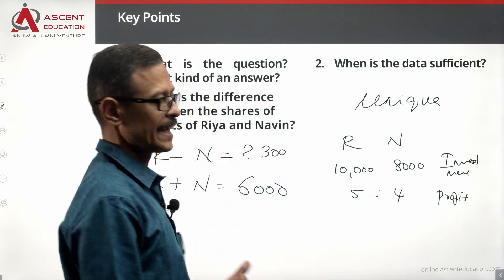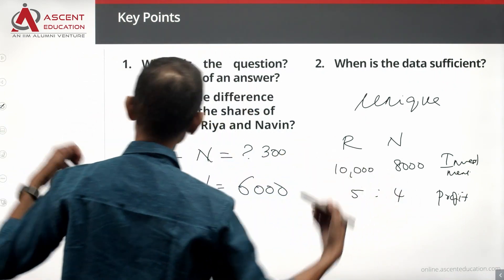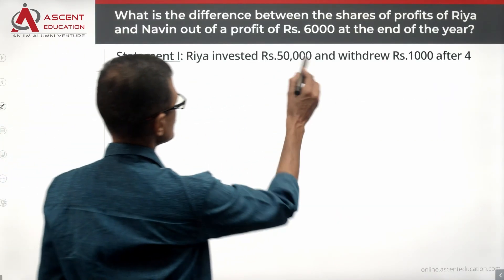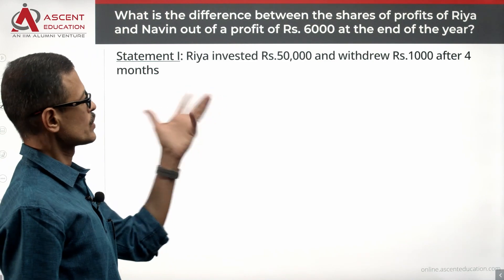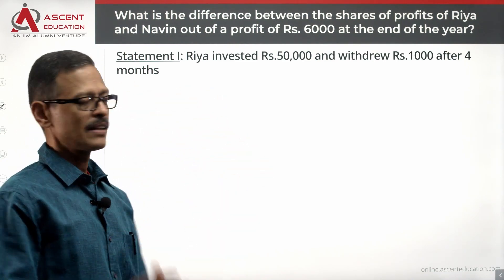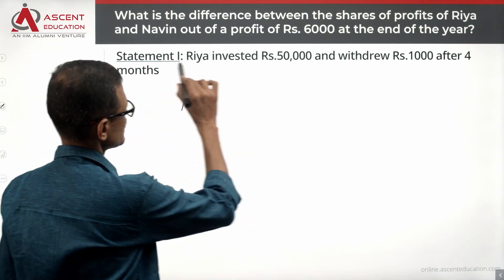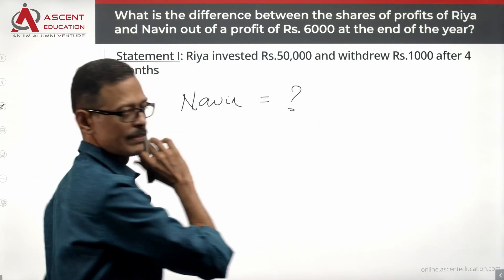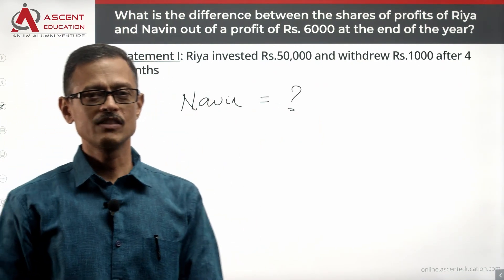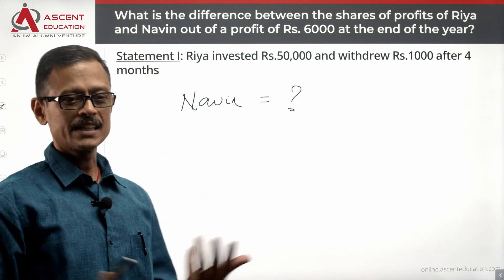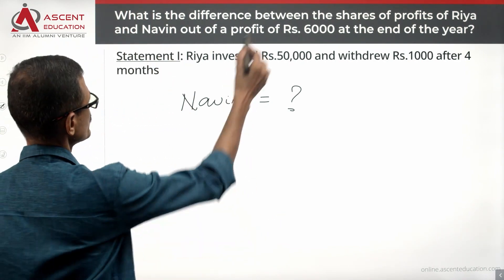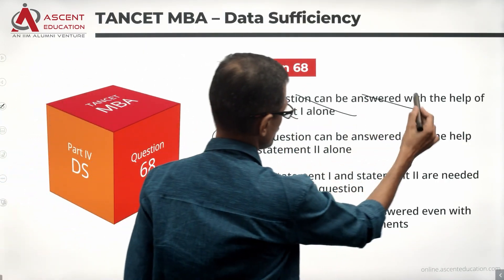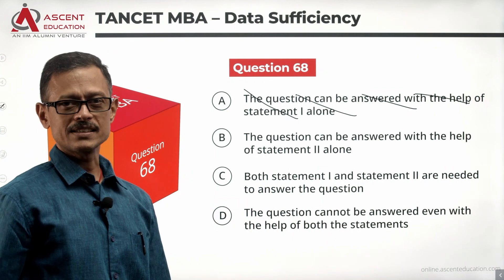Let's see whether we have data about the ratio of their investments for this year. Statement 1 alone: Rhea invested 50,000 and withdrew 1,000 after 4 months. Do we know anything about Navi? We do not have any data about Navi's investment. Without knowing that, we cannot distribute the 6,000 rupees profit between them. Statement 1 alone is not sufficient — rule out answer option A.